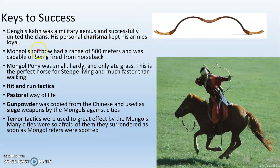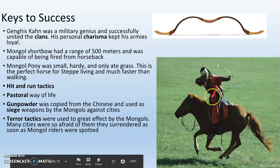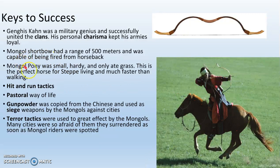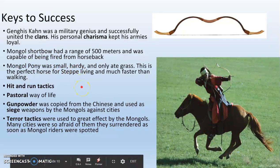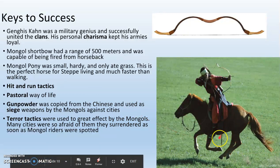First, Genghis Khan was a military genius. He successfully united the clans, used them effectively in combat, and had the charisma to persuade people and keep his armies loyal. The next major key to success is the Mongol shortbow, capable of firing accurately 500 meters from horseback — so a soldier could move and shoot at the same time. The Mongol pony was small, hardy, and ate only grass — perfect for steppe living and much faster than walking. Compared to a European horse carrying a knight, this horse was cheap, quick, and you could shoot a bow from it. This enabled their hit-and-run tactics.